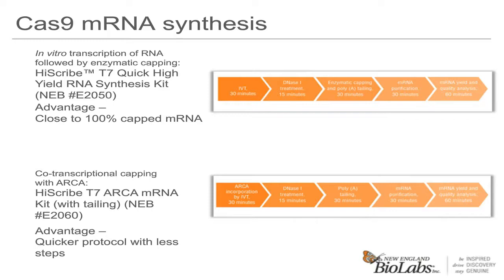We have several kits available to simplify this part of the workflow. For post-transcriptional capping, we have two kits: the HiScribe T7 Quick Kit in master mix format, which we recommend unless you want to fully replace with modified nucleotides, and the HiScribe High Yield Kit. For co-transcriptional capping, we have two ARCA-containing kits, one with poly-A tailing reagents and one without. Post-transcriptional capping with vaccinia capping enzyme has the advantage of close to 100% of transcripts being capped. Co-transcriptional capping has a much quicker protocol with fewer steps. For standard transcription, the IVT reaction can take as little as 30 to 60 minutes, followed by a short DNase treatment, then capping and tailing at about 30 minutes each, followed by purification.